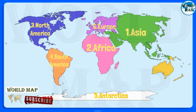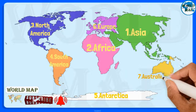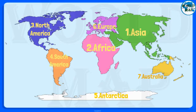Number 7: Australia. Australia is the smallest continent in the world and is the flattest and second driest after Antarctica. It is also the second least populated after Antarctica, and comprises 14 countries.